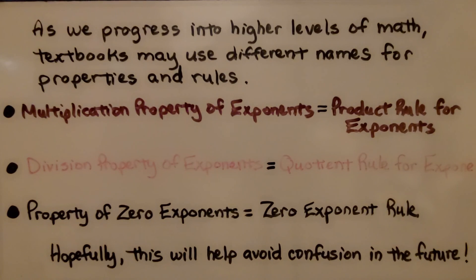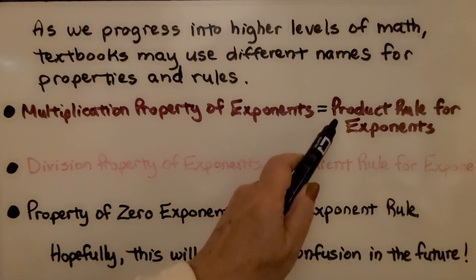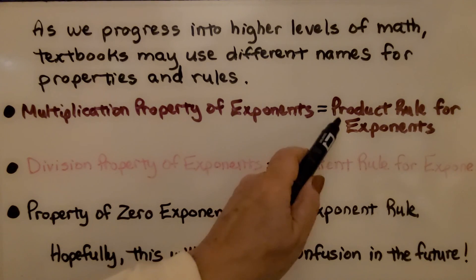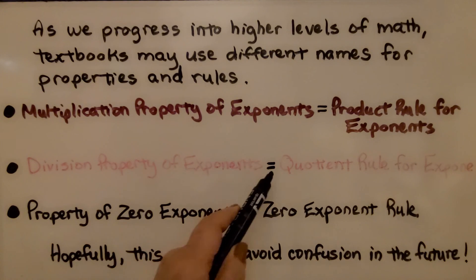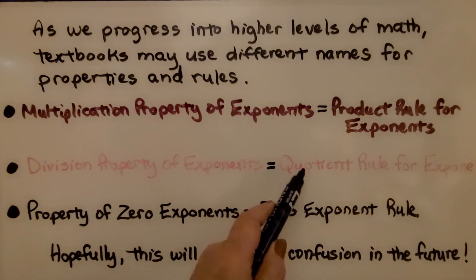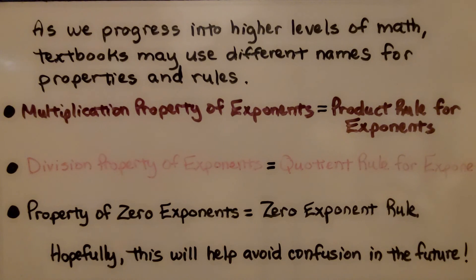As we progress into higher levels of math, textbooks may use different names for properties and rules. The multiplication property of exponents is also called the product rule for exponents — you may see that in an Algebra 1 book. The division property of exponents is also known as the quotient rule. The property of zero exponents is also the zero exponent rule. Hopefully this will help you avoid confusion in the future — you'll say, oh, I'm familiar with that rule or property.